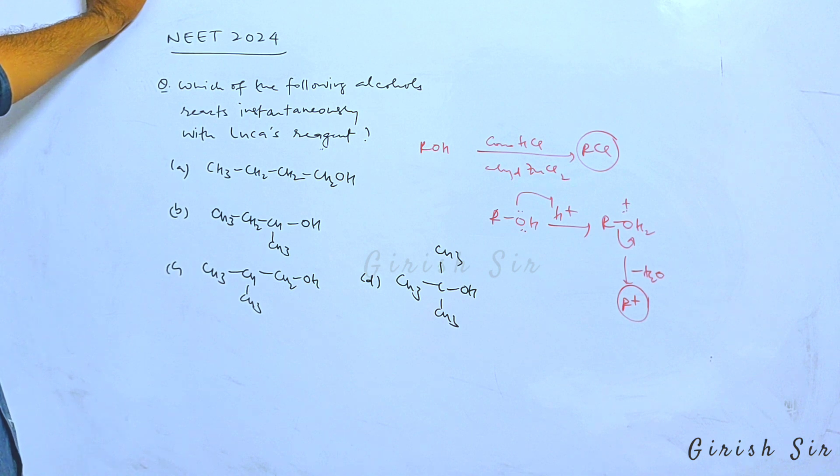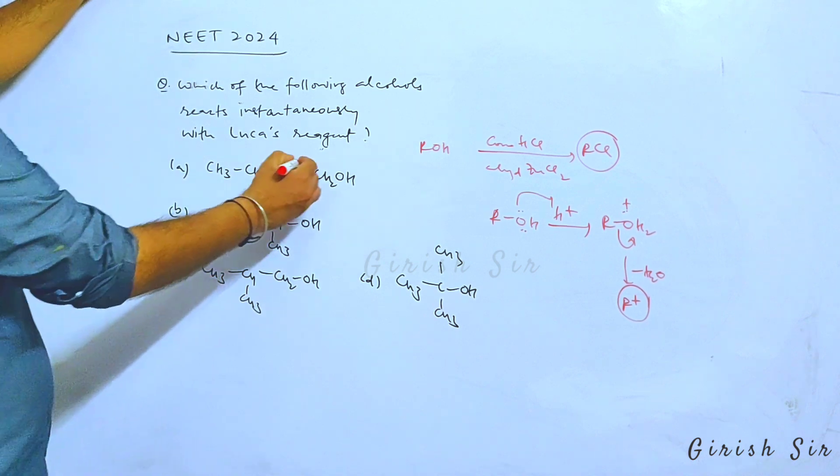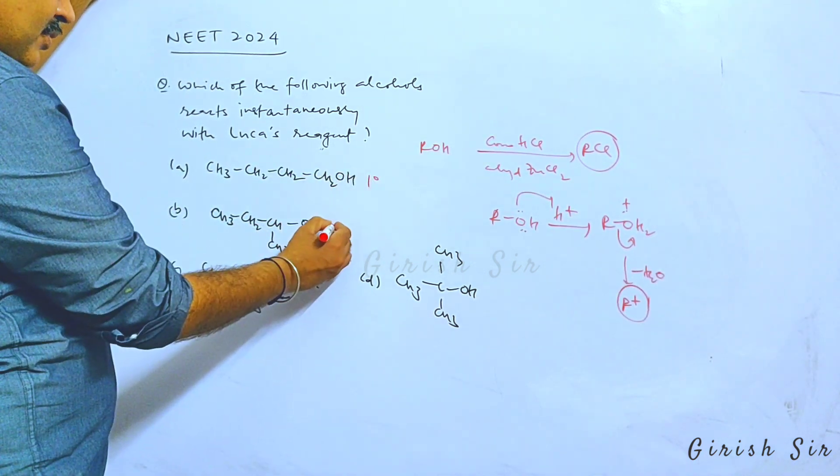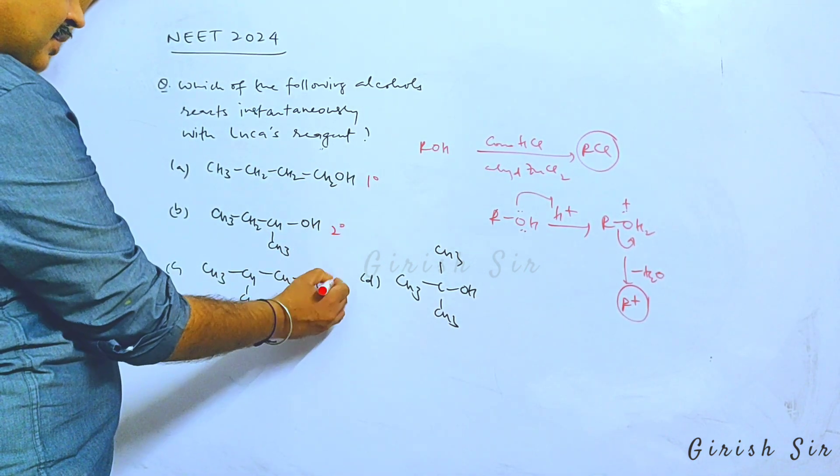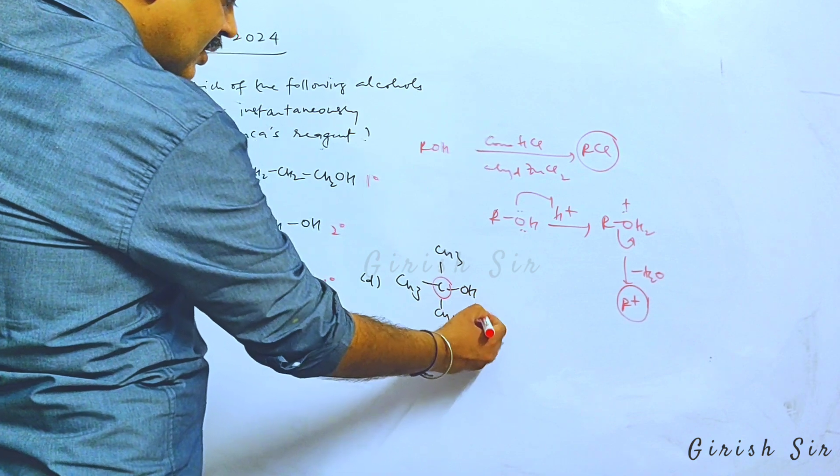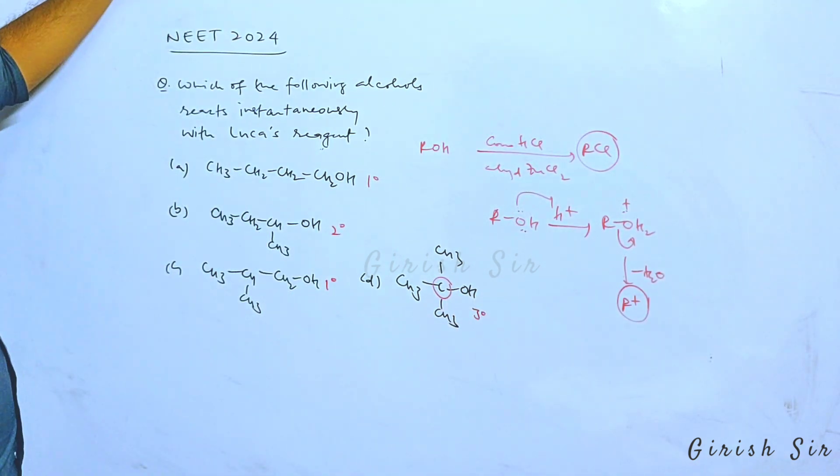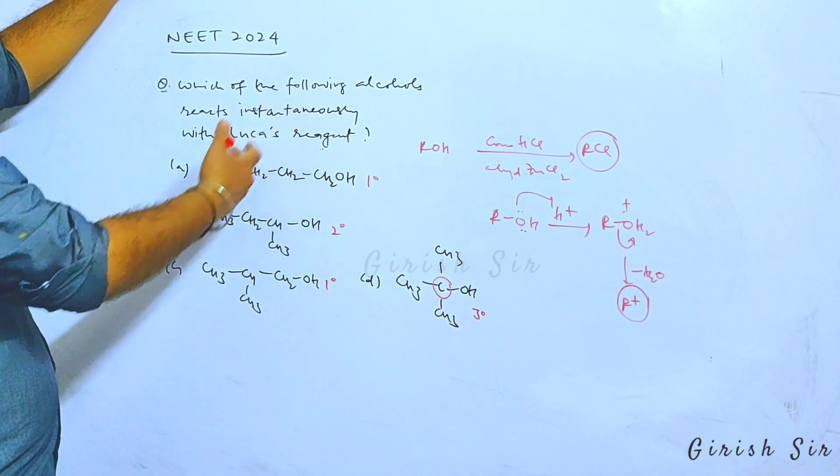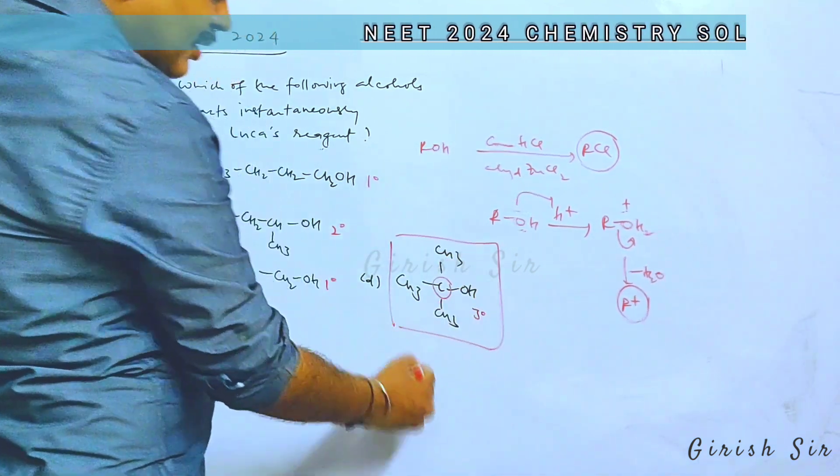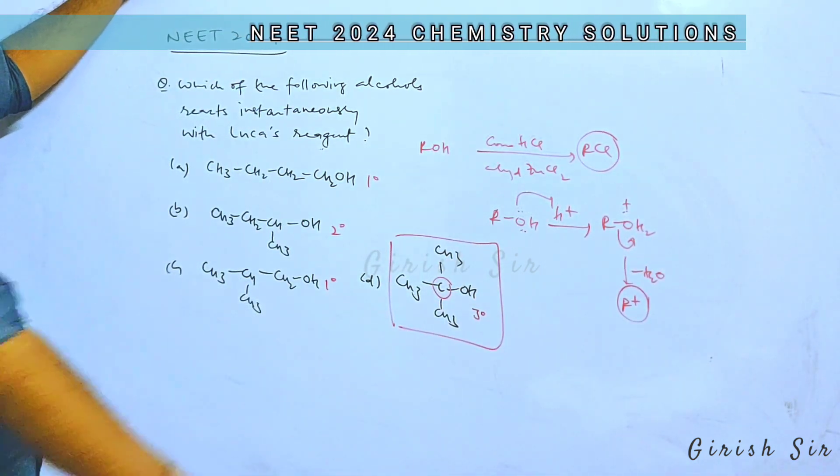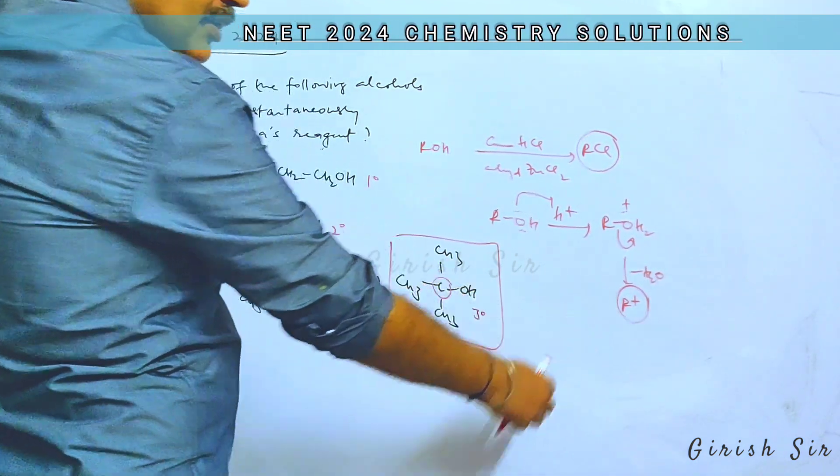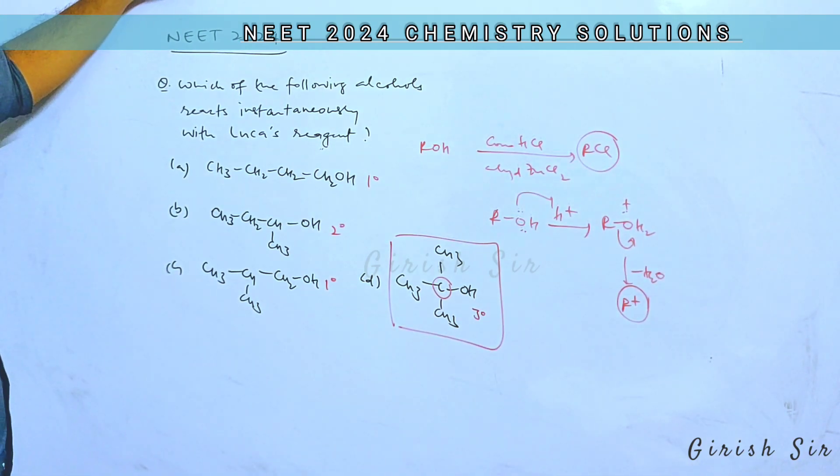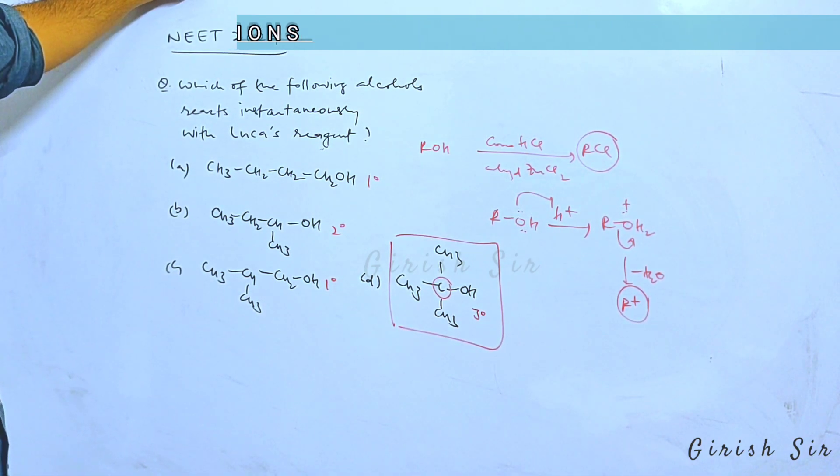The reaction proceeds via formation of a carbocation intermediate. So the more stable carbocation, the faster the reaction, the faster you will see the turbidity in the test tube. So out of the given alcohols, this being 1-degree, this also, this being 2-degree, this is 1-degree, while this one is 3-degree. 3-degree will form a 3-degree carbocation which will be most stable compared to the remaining options. So I believe this 3-degree alcohol will react fastest because of formation of a 3-degree carbocation, which is most stable out of the given options.